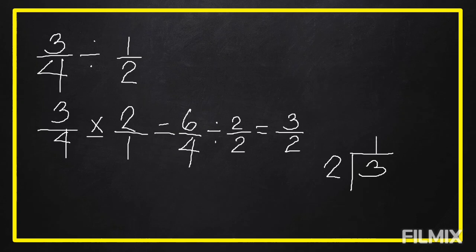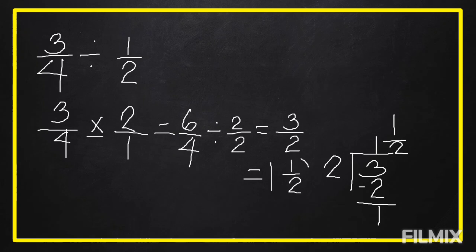One times two equals two. Three minus two equals one. The remainder is one, which we take as our numerator, and two — the divisor — as our denominator. So three over two is equal to one and one-half. Three-fourths divided by one-half equals one and one-half.